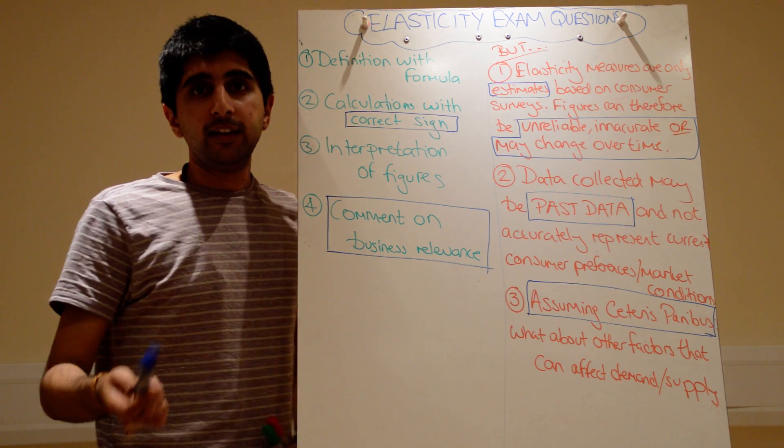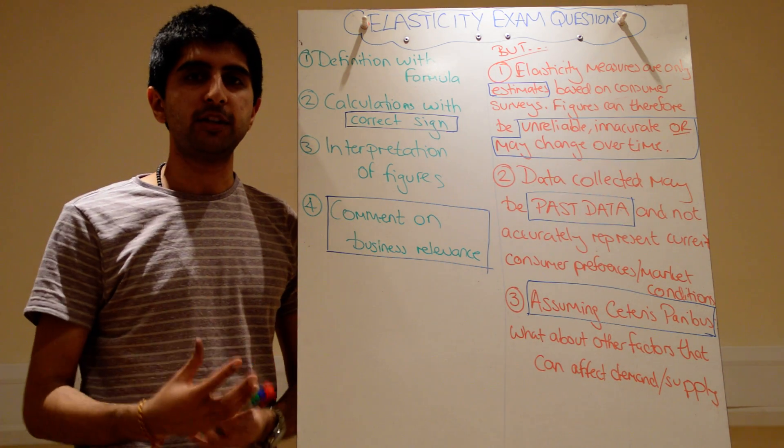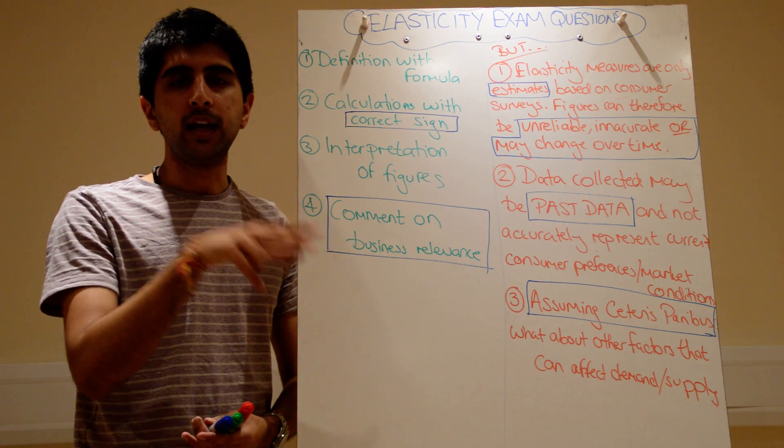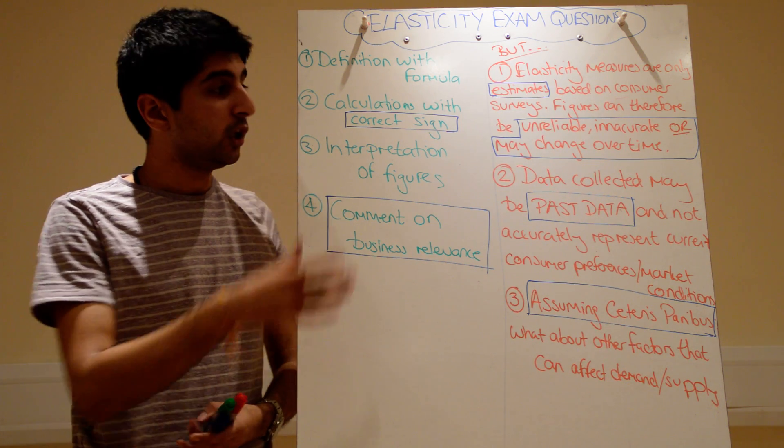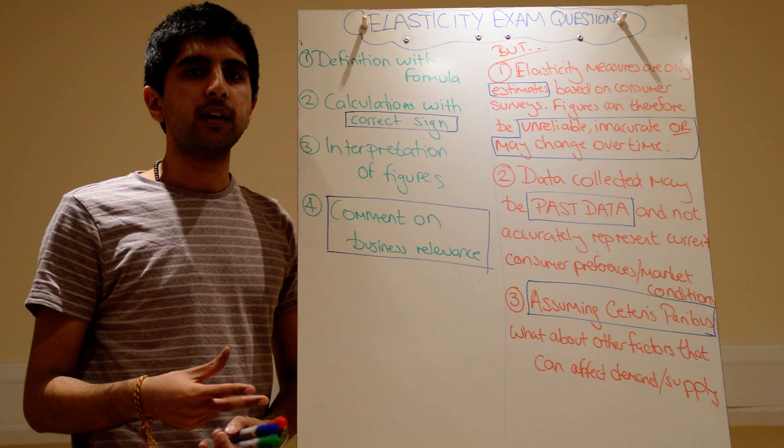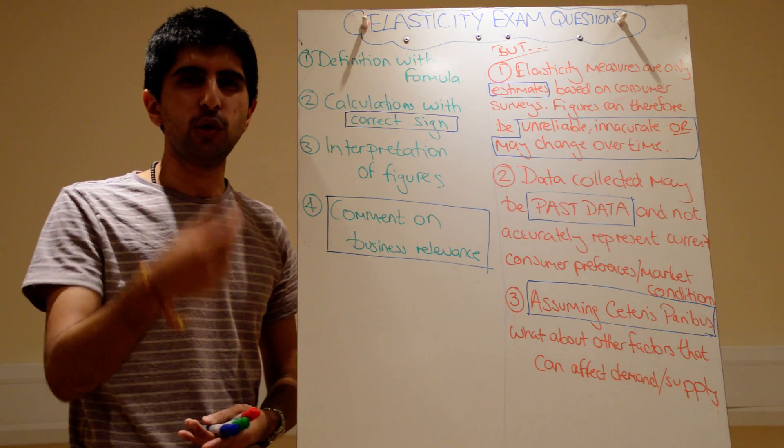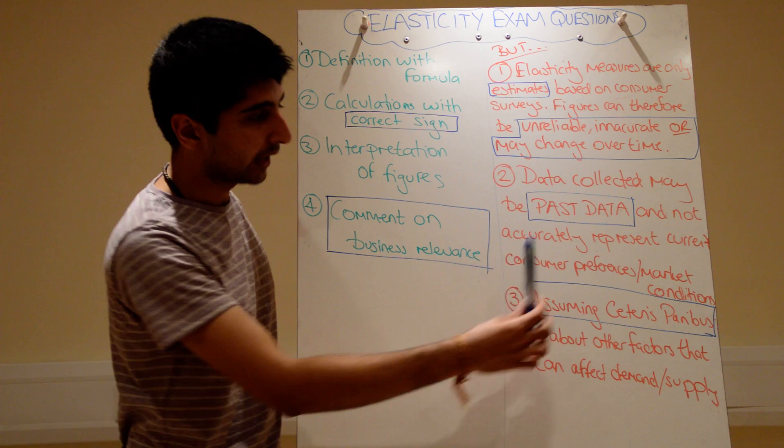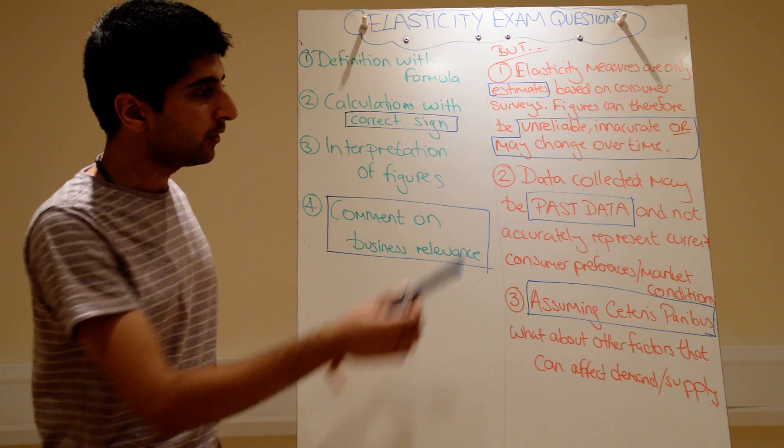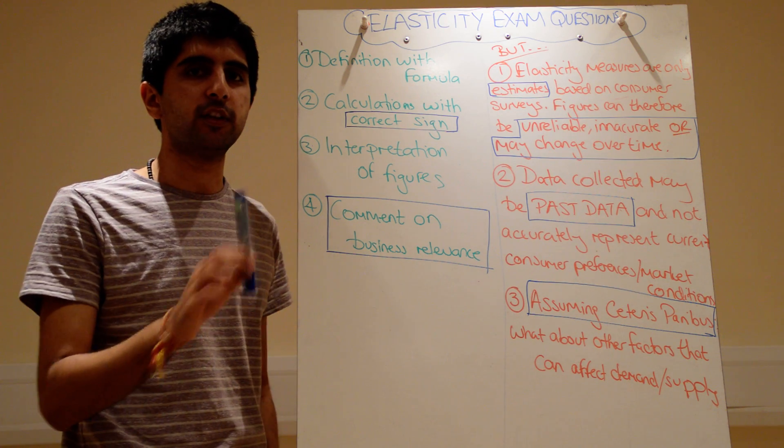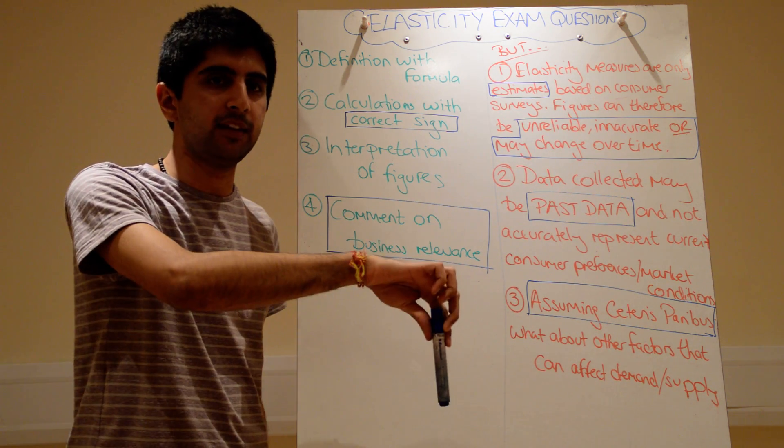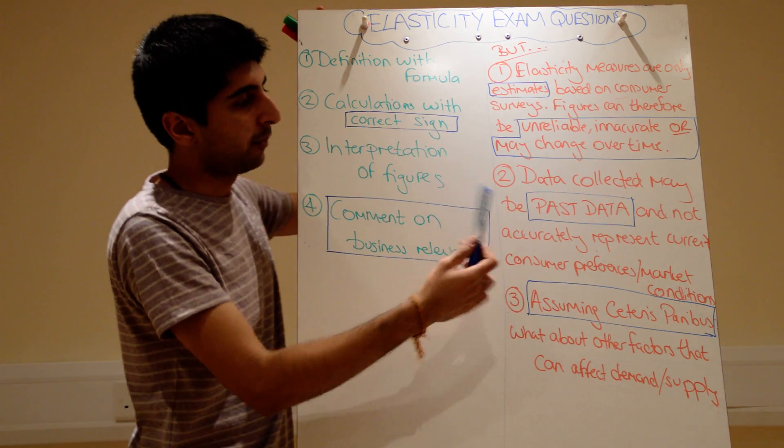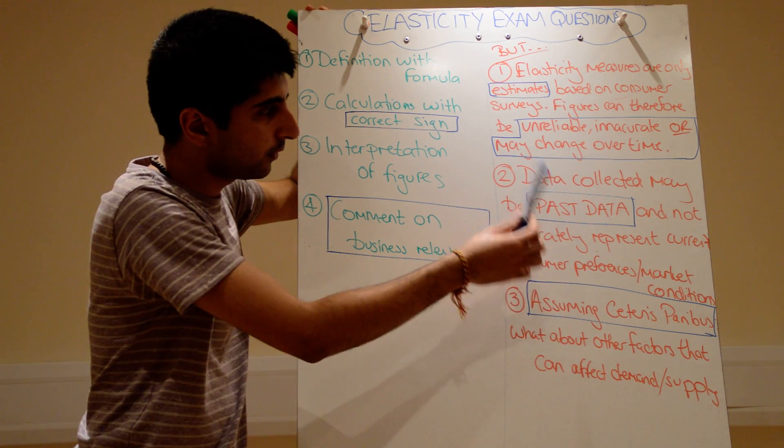Another problem. Data collected might be past data. So, another way of collecting data to measure elasticity, maybe you want to raise the price of one of your goods. Well, if you know a competitor did a similar thing maybe last year, or two years ago, you might analyse that competitor's data. So, the quantity demanded of a competitor's good, and use that to measure your elasticity. Well, if that's the case, that was past data. It might not reflect current preferences and current market conditions. So, that's another common way of collecting data. If you have some reference to go to, you will go to it, but that will mean collecting past data. What if current consumer preferences and market conditions are different to what they were back then? Your figure won't be fully reliable and accurate. So, data collected might be past data.